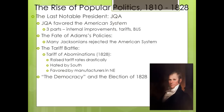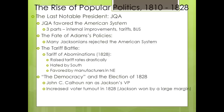Before we get to Jackson's presidency, we need to discuss the election of 1828. John C. Calhoun, the senator and former congressman from South Carolina, runs as Jackson's vice president. In 1828 we see a large increase in voter turnout, with Jackson winning by a wide margin. Between 1828 and 1840, the number of eligible voters who actually voted increased drastically.